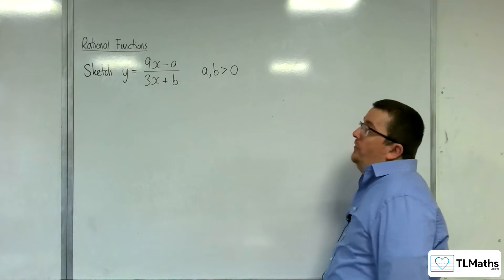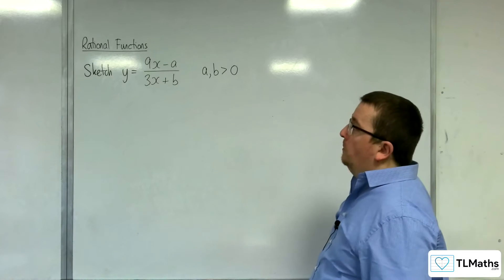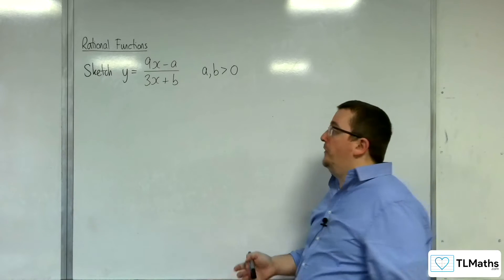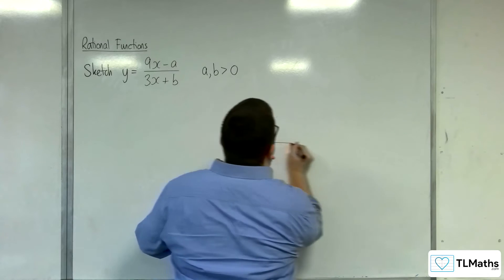In this video, I'm going to sketch y equals 9x take away a over 3x plus b, where a and b are both positive. So let's draw some axes first.